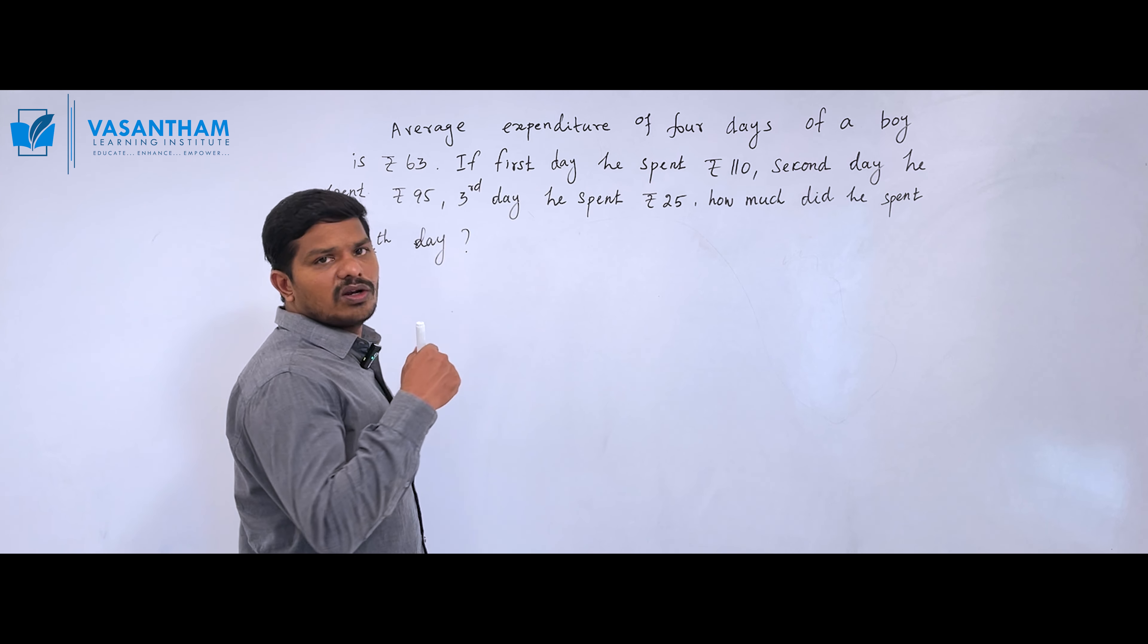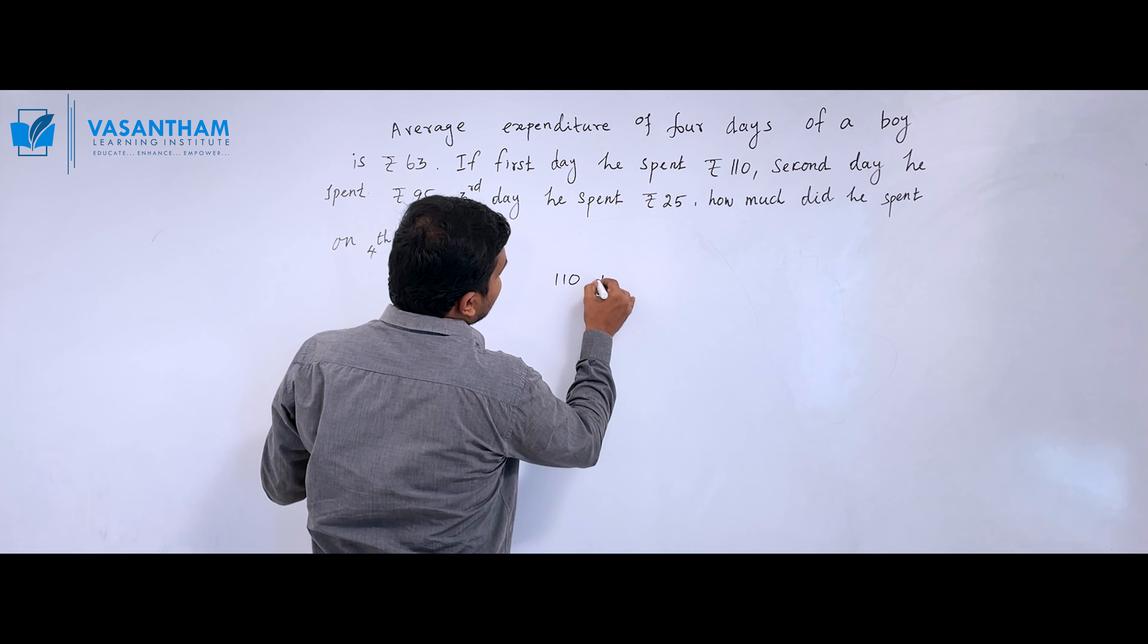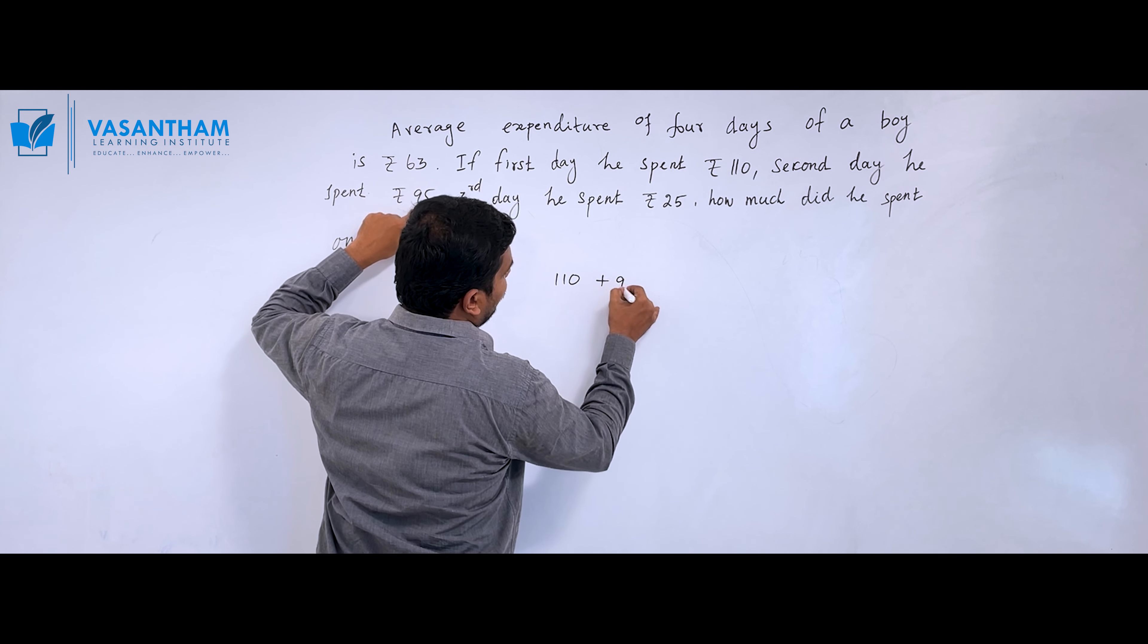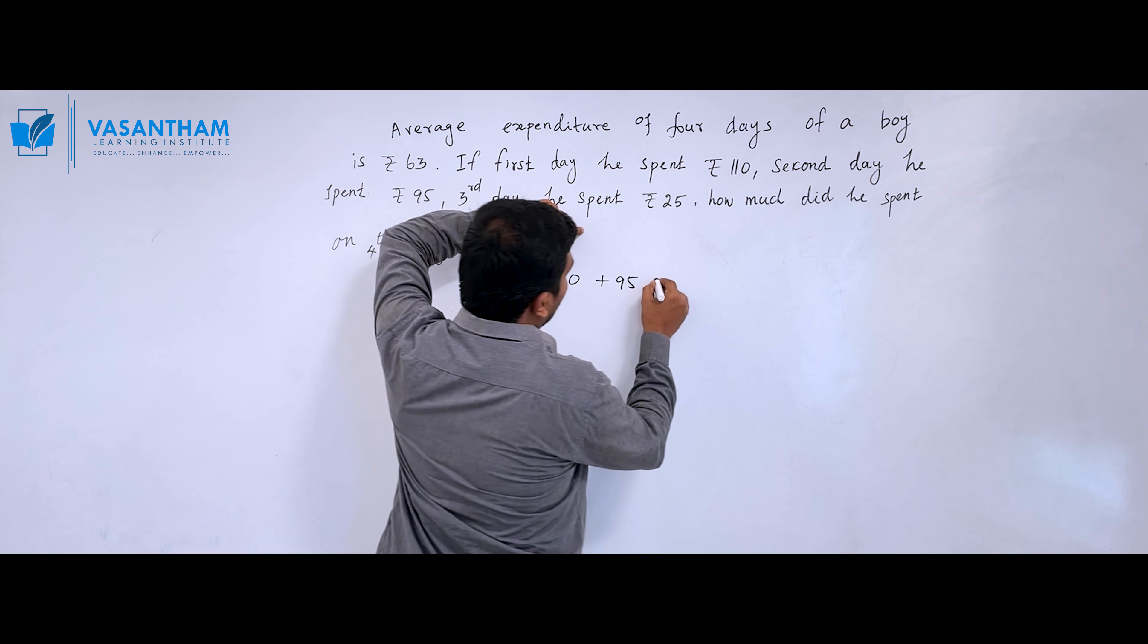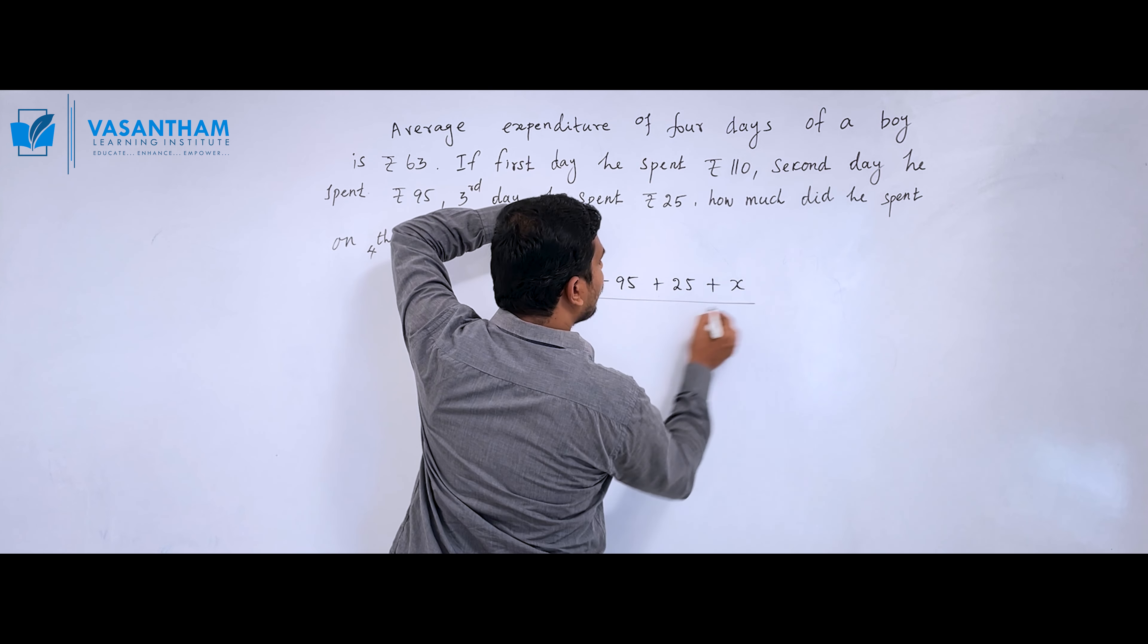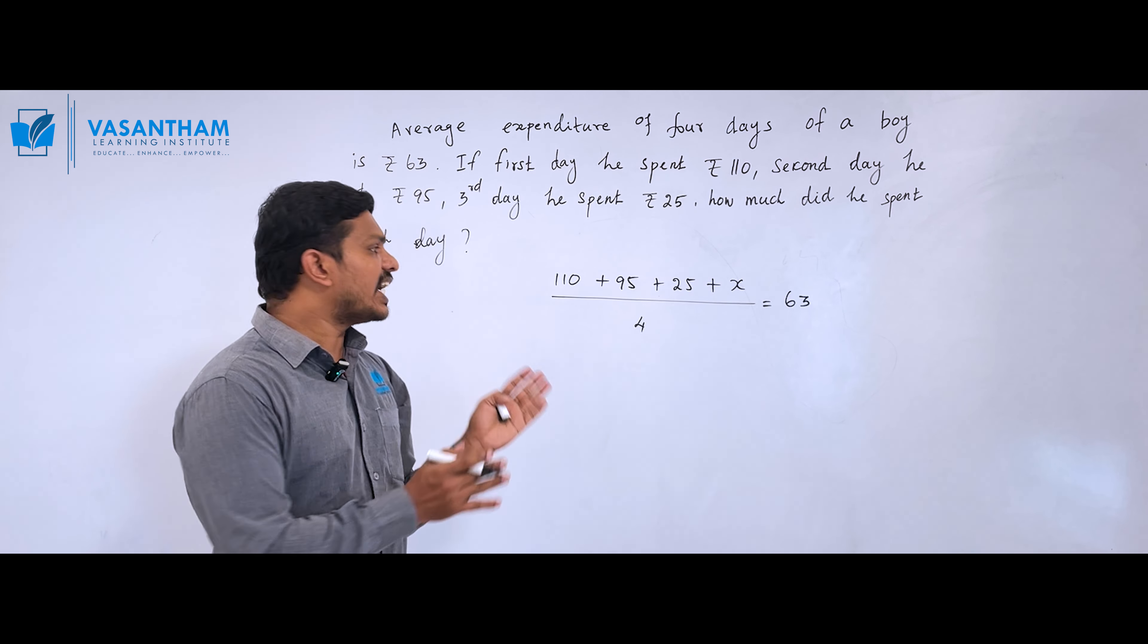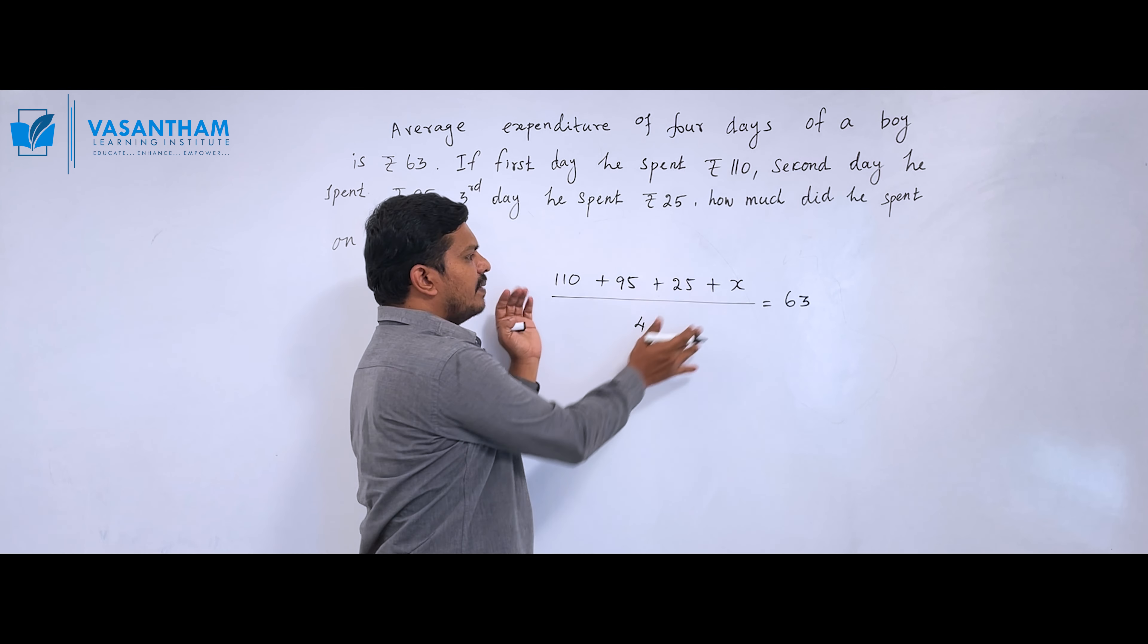So how do you solve it? First day: 110 rupees, second day: 95 rupees, third day: 25 rupees, fourth day: unknown. The total of 4 days divided by 4 equals the average. We convert this situation into a mathematical equation.